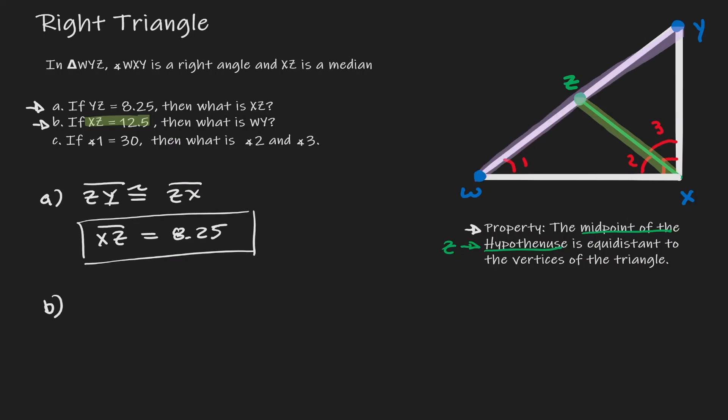Now let's think about, is there any relationship between the purple line and the green line? Well there is, because if Z is equidistant to point Y, point W, and point X, then therefore ZX is going to be half the distance from WY.